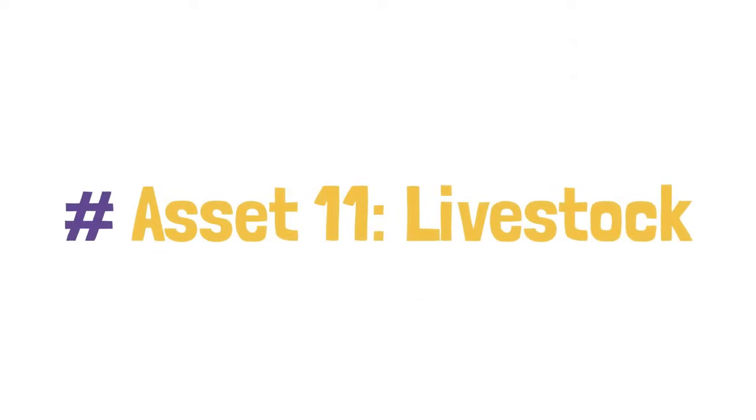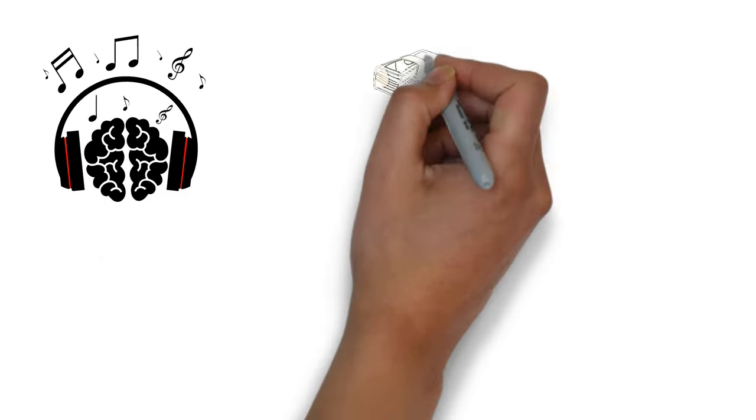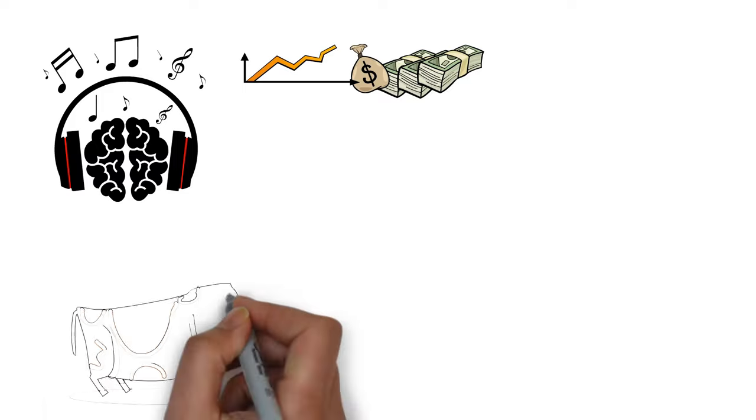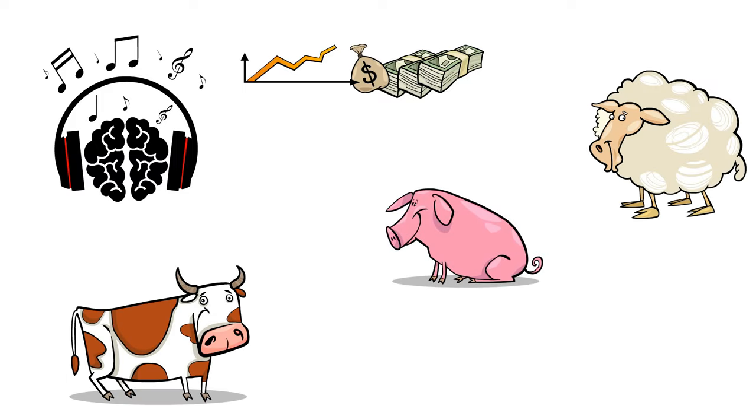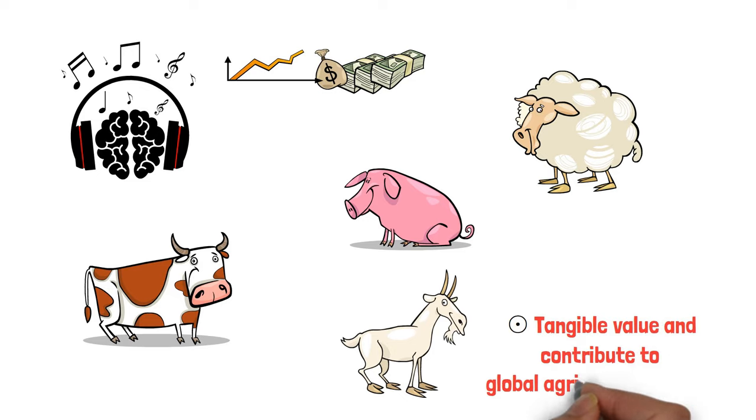Asset 11: Livestock. While it may seem unconventional, livestock can be a viable investment. Animals like cows, pigs, sheep, and goats have tangible value and contribute to global agricultural output.